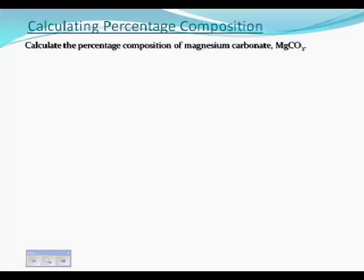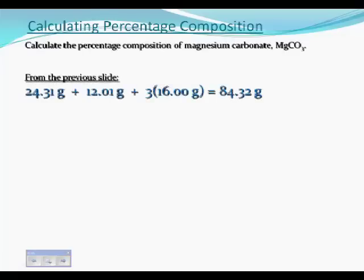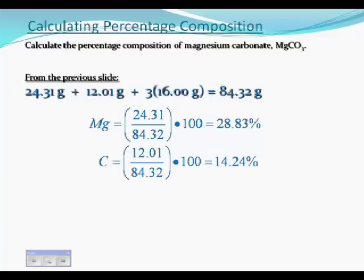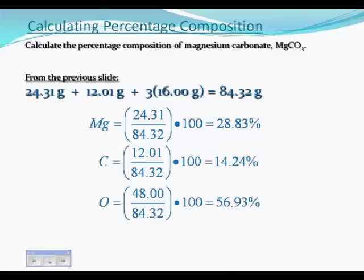Likewise, percentage composition can be calculated from that information. You happen to know that from the previous slide we have a molar mass for magnesium carbonate. The amount of magnesium is 24.31 grams, so it is 28.83% of the total. Same thing with the carbon. We've got one carbon, 12.01 divided by 84.32 times 100 gives you the 14.24%. And finally, the oxygen is the remainder and clearly you could have done it by subtracting from 100, but notice that we are going to four significant figures in every single case.